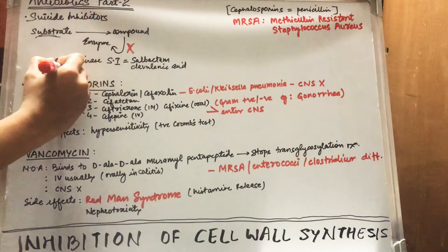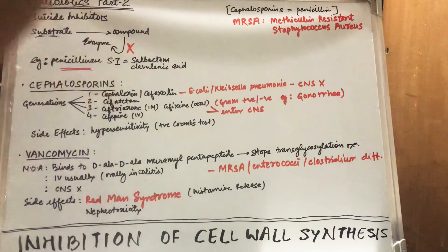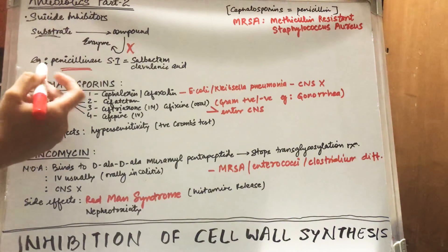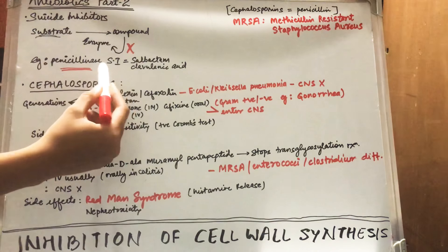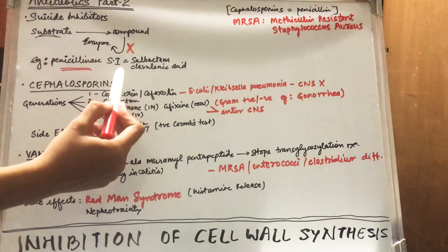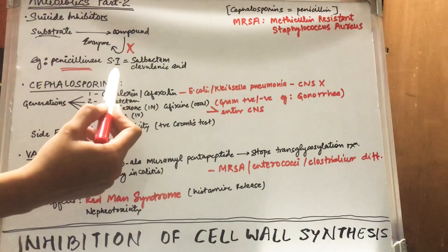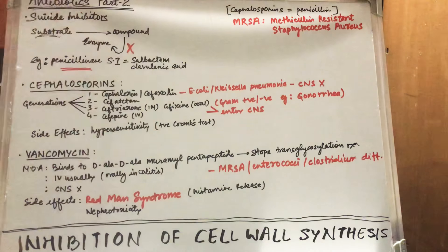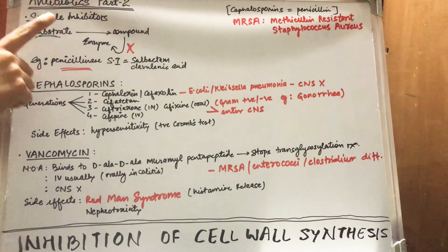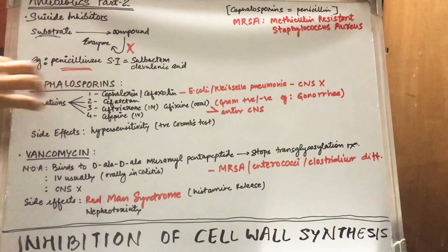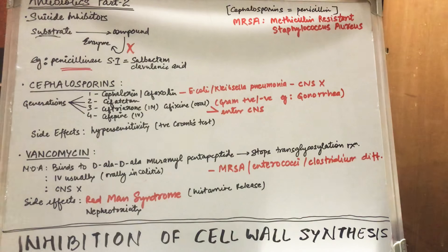An example related to that group is penicillin, which we discussed in the last video. The suicide inhibitors in the penicillin group are sulbactam and clavulanic acid. Now let's start with cephalosporins.